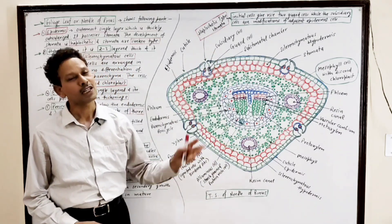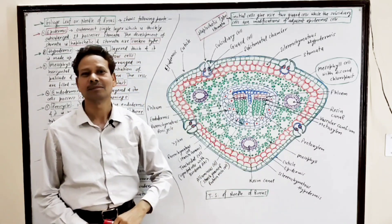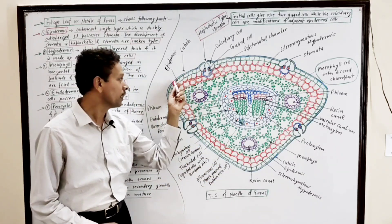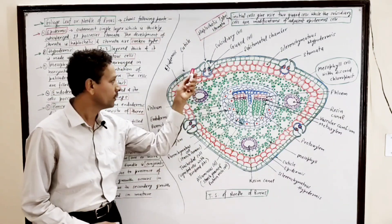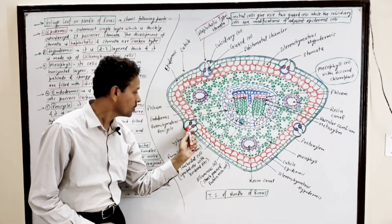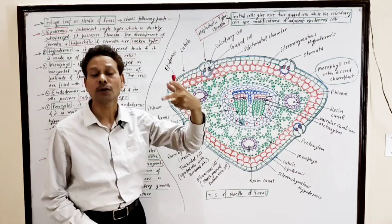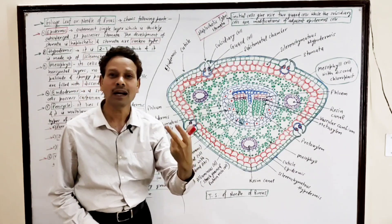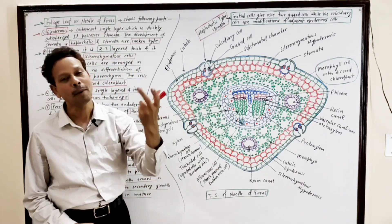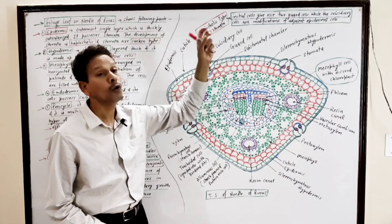This transverse section shows the following parts. The first part is this outermost layer — it is the epidermis. Note down: this outermost layer is a single layer made up of parenchymatous cells. This outer layer, the epidermis, consists of numerous pores or stomata. In case of Pinus, these stomata are sunken type, which shows the xerophytic characteristics of Pinus. The stomata in the Pinus leaf are haplocalic type.